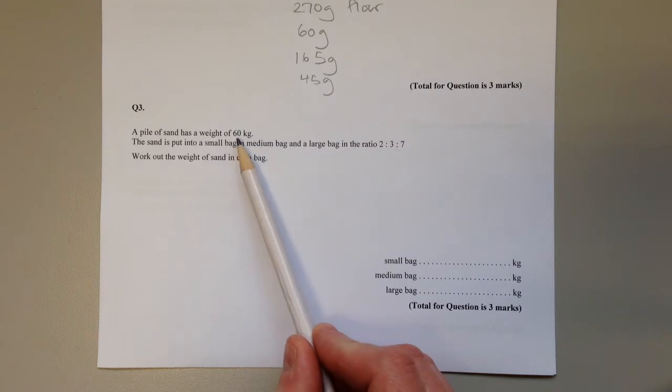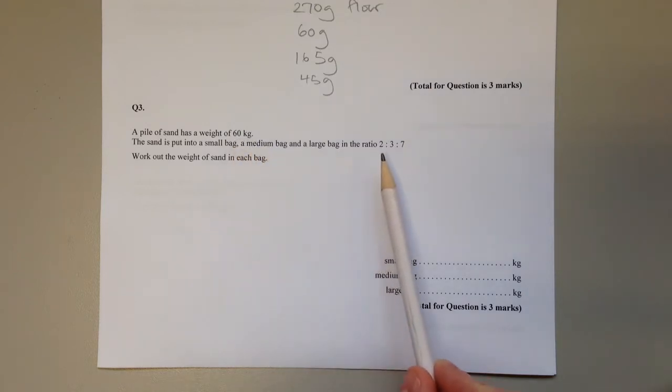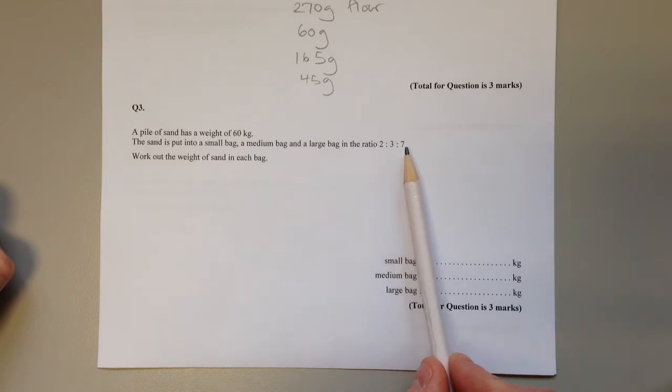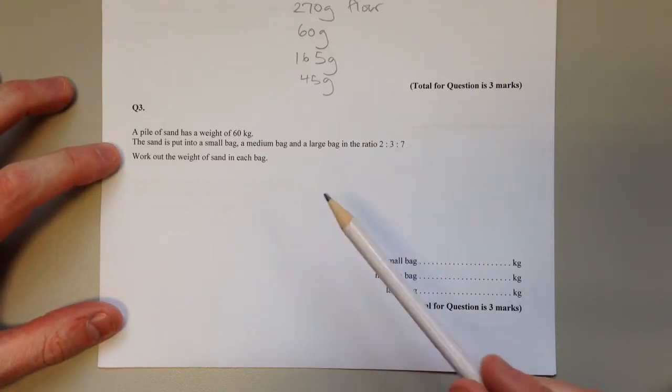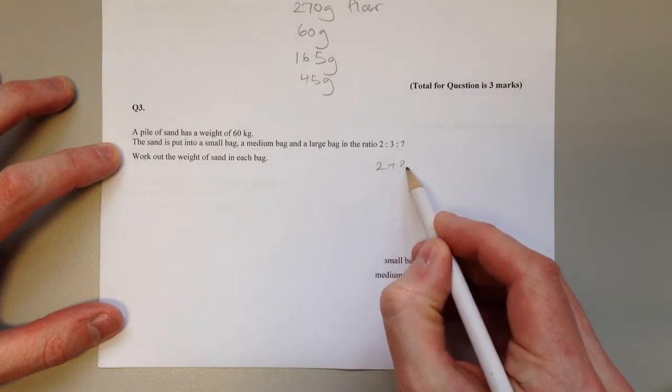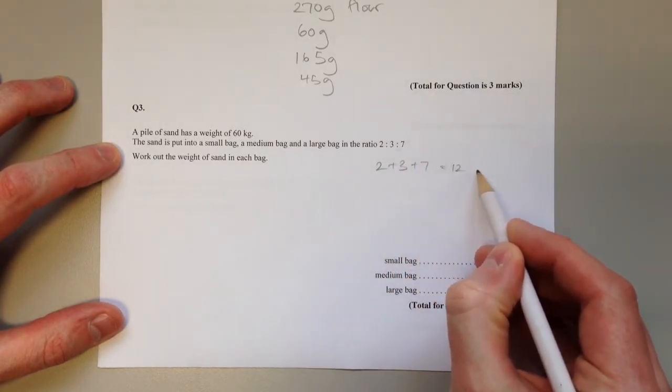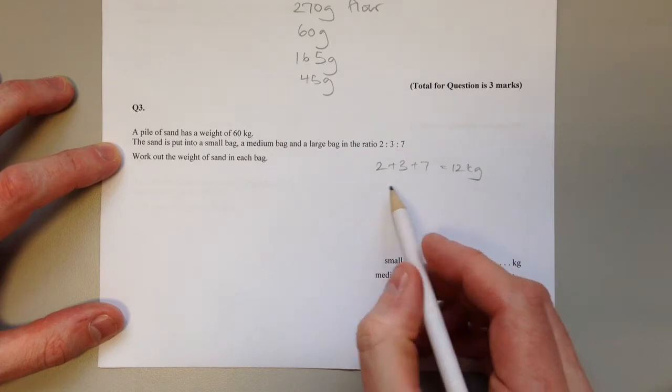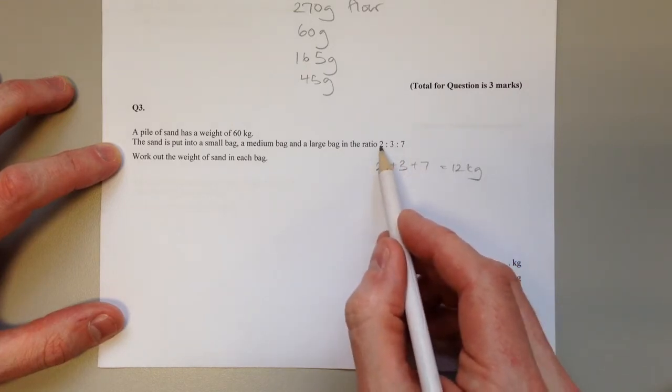We have to share the 60 kilograms in that ratio. You could have 2 kilograms in the small bag, 3 in the medium bag, and 7 in the large bag. Then they would be in the correct ratio. But if you add those together that equals 12 kilograms. So you could have the bags twice as heavy.